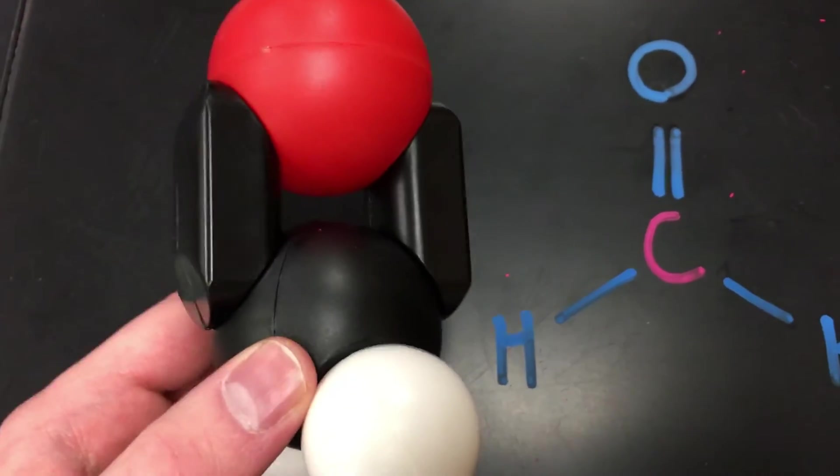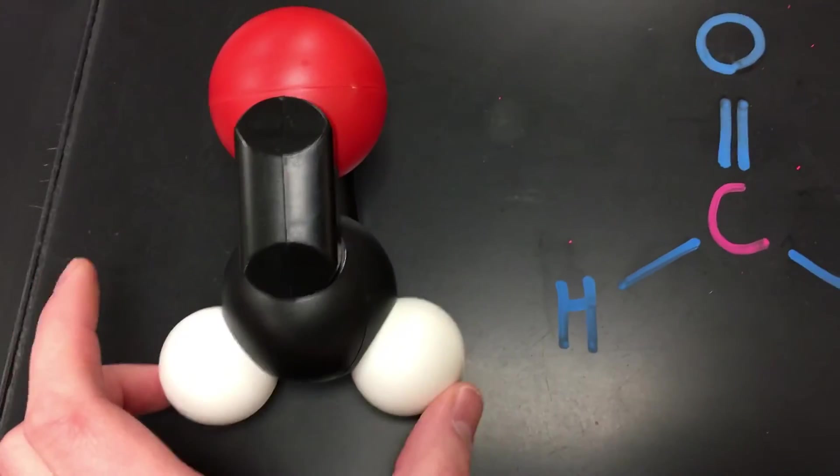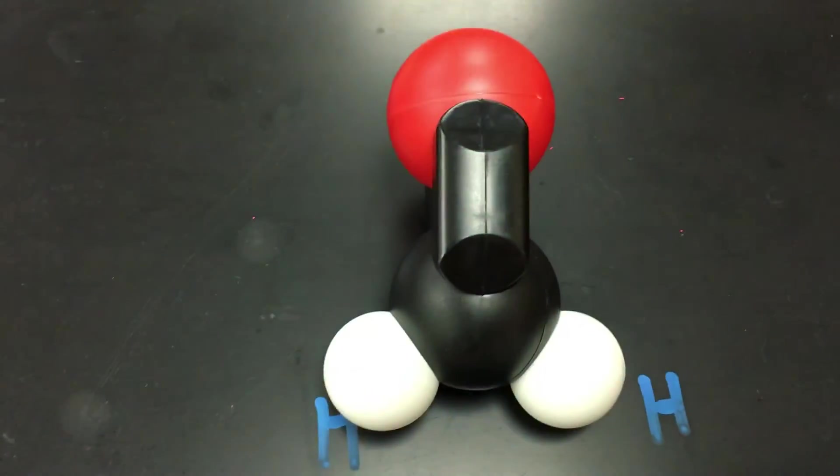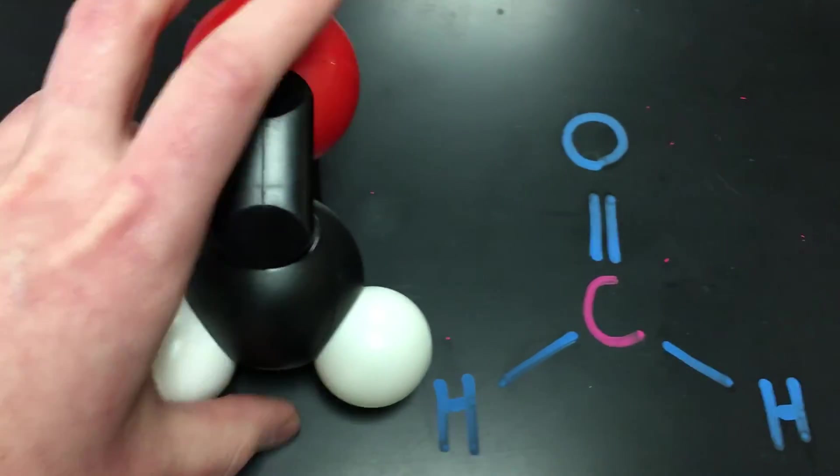So I've got the double bonds, the oxygen up here in red. My hydrogen atoms are in white down here. It basically fits that shape where they're kind of out in a triangle.